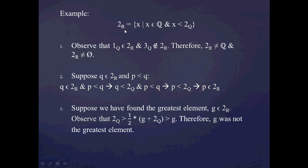Thirdly, we show this set has no greatest element. Suppose we found a greatest element G in this set. Observe that by taking the average of the rational number 2 and this supposed G, we can always find some other rational number between G and 2. This is basically the argument behind the density of the rational numbers — so G wasn't the greatest element, meaning this set has no greatest element. We've verified this set is a perfectly good Dedekind cut and therefore a real number.